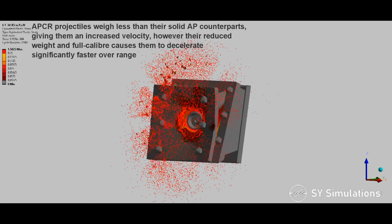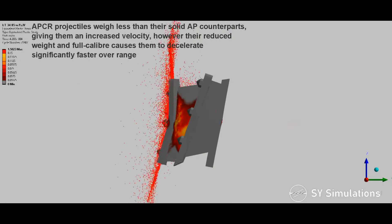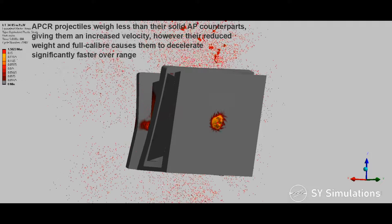APCR projectiles weigh less than their solid armor-piercing counterparts, giving them an increased velocity. However, their reduced weight and full caliber causes them to decelerate significantly faster over range.